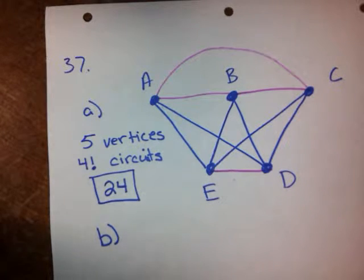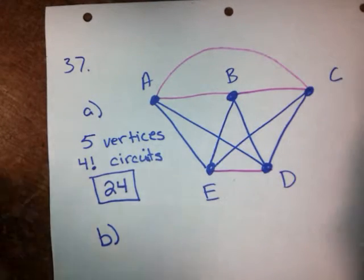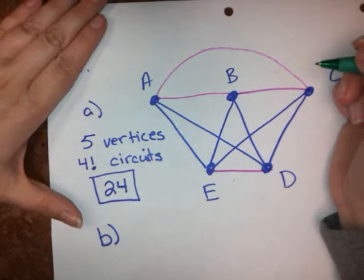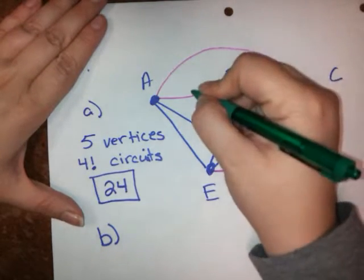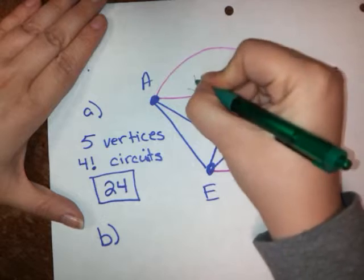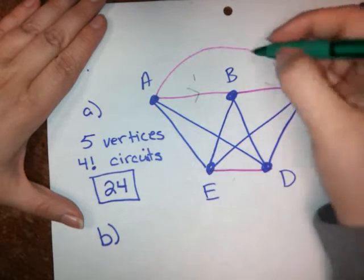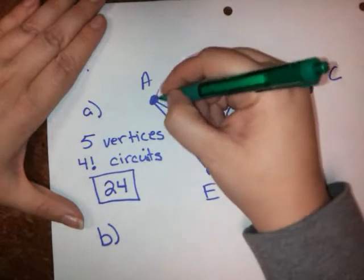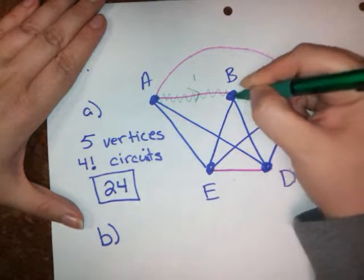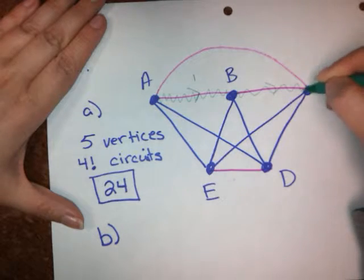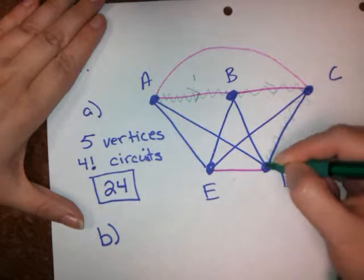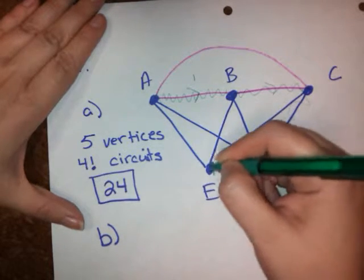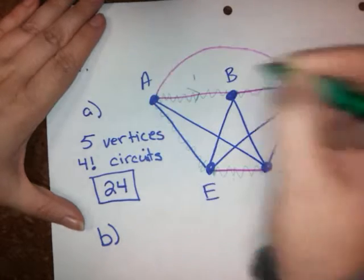I think probably the easiest one for me to think about on any of these complete graphs is just go from one vertex to the next. So, the first one will go A to B, B to C, and I think we did these with squiggly lines. So, squiggly lines A to B, B to C, C to D, D to E, and E to A.